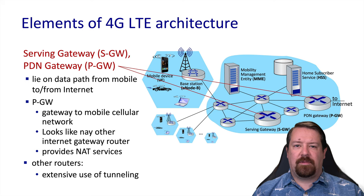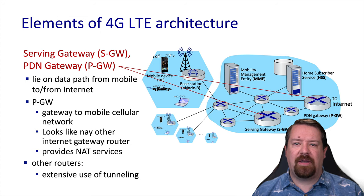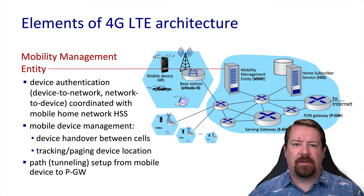The packet core includes routers with specific functions. There is a gateway to the internet known as the packet gateway, which often provides NAT services. Almost all mobile networks make very heavy use of NAT because they have so many devices that there are not enough IPv4 addresses to give each a unique public address. The serving gateway is the entry point to the packet core used by the base station. The mobility management entity manages the real-time state of a device's connection, in contrast to the HSS which manages relatively static data.